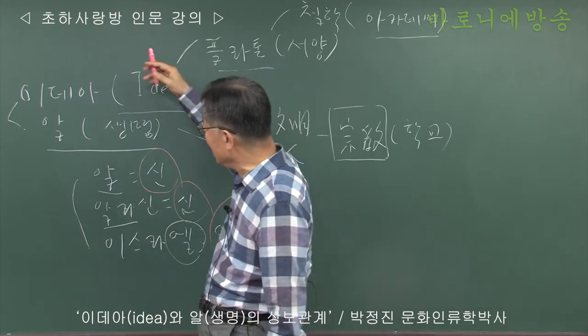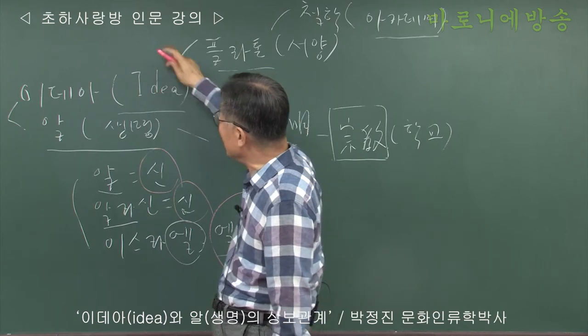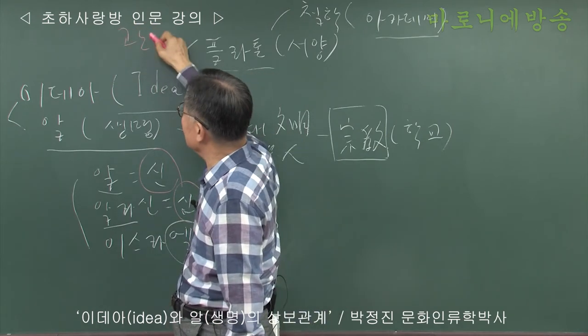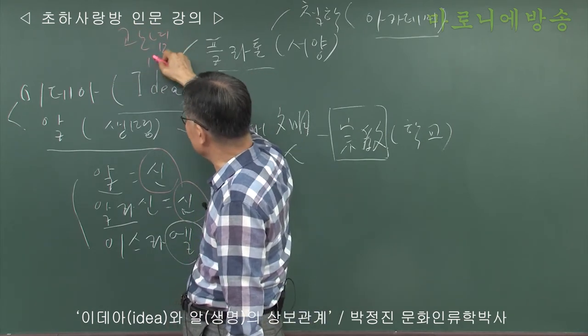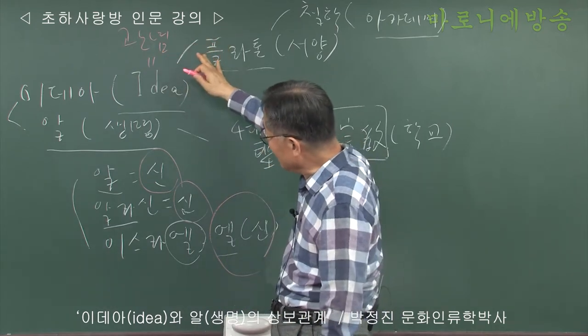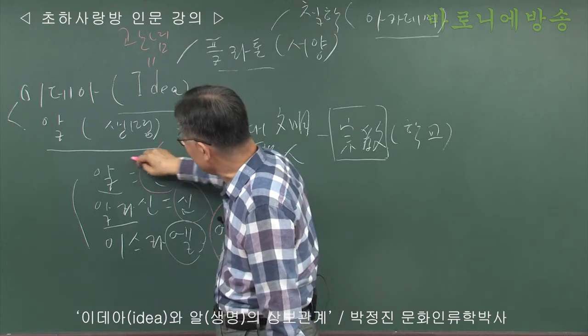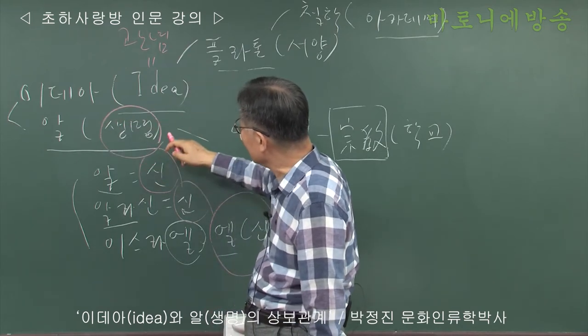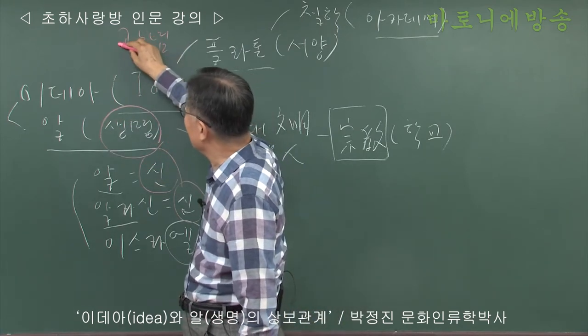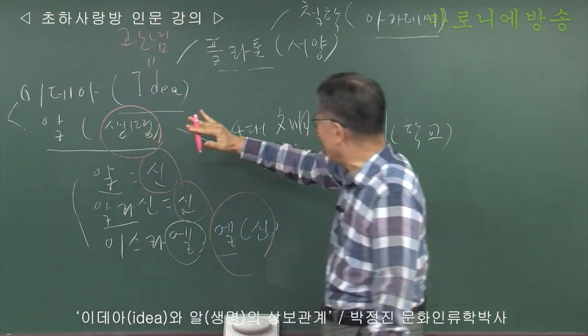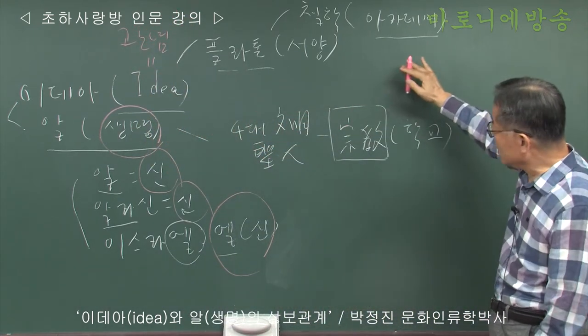그렇게 보면 이데아에는 이제 이데아 이게 이제 관념이죠. 관념 이데아라는 게 뭐 좀 쉽게 말하면 관념 아닙니까. 서양에 관념이 있다면 동양에 아시아 동양은 생명이 있죠. 딱 있죠.